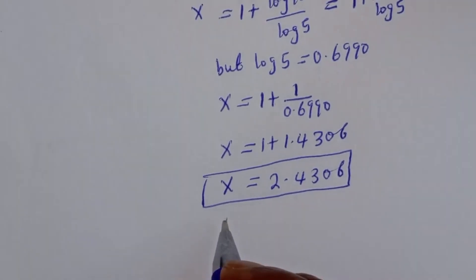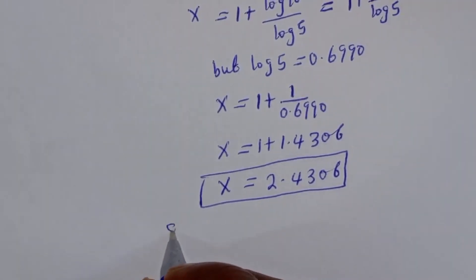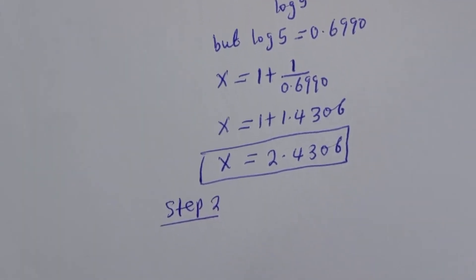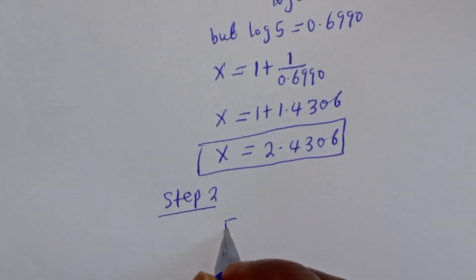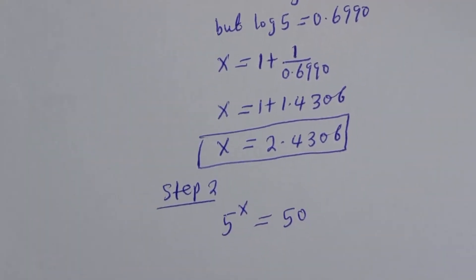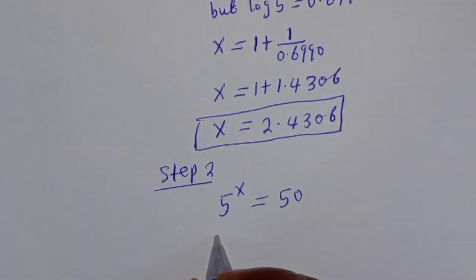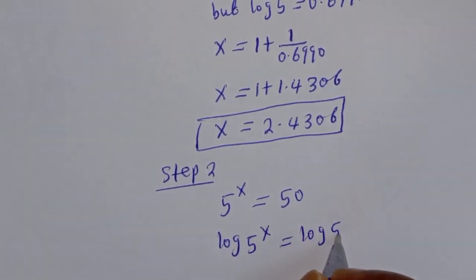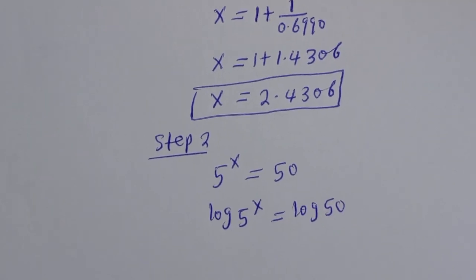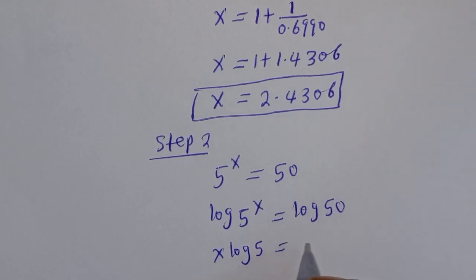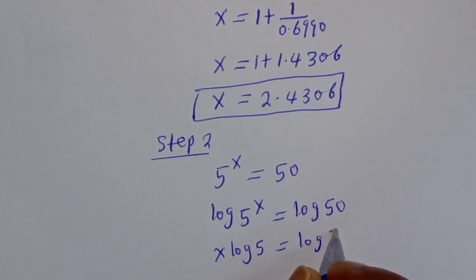Or we can solve in another way — let's call this step 2. We have 5 raised to power s is equal to 50. Let's take the log of both sides: log 5 raised to power s is equal to log 50.